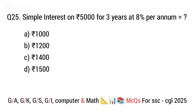Question 25. Simple interest on 5000 for 3 years at 8 percent per annum. Is equal to? The right answer is option B.